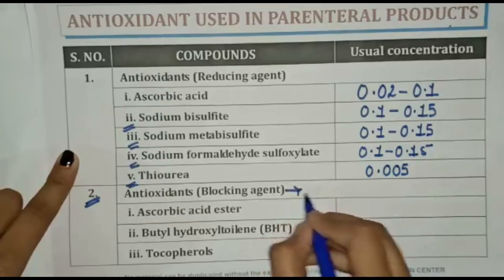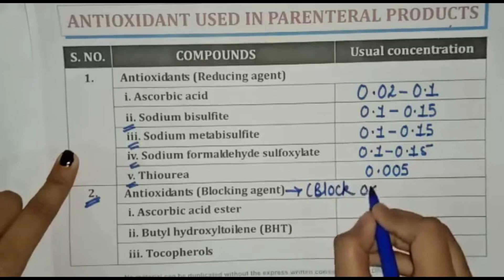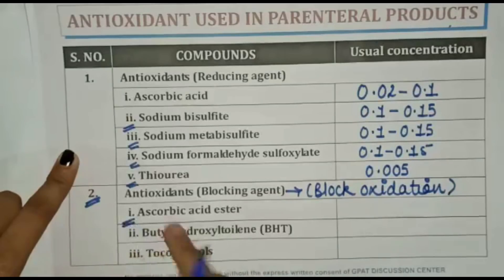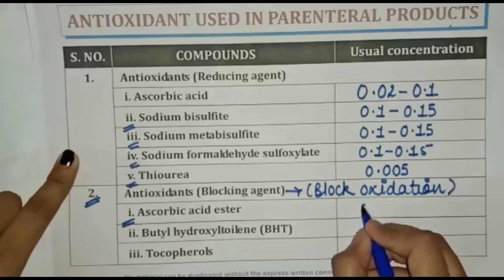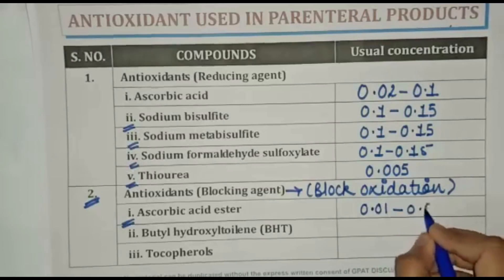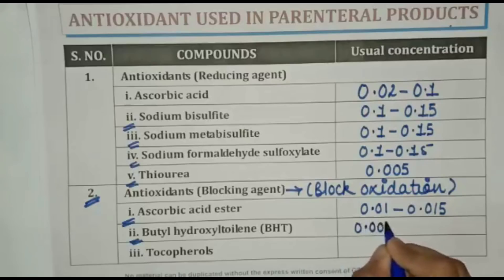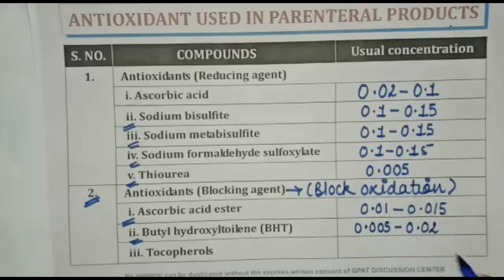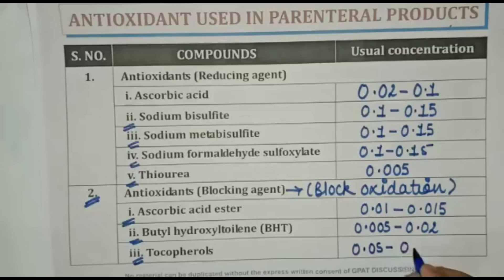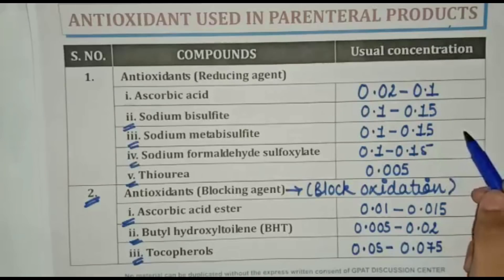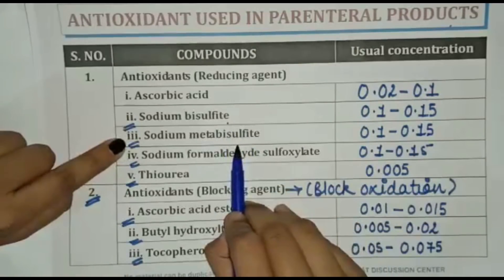Thiourea concentration is 0.005. Now, antioxidant blocking agents — blocking agents block oxidation. Ascorbic acid ester concentration is 0.01 to 0.015. Butylated hydroxytoluene (BHT) concentration is 0.005 to 0.02. Tocopherol concentration is 0.05 to 0.075.